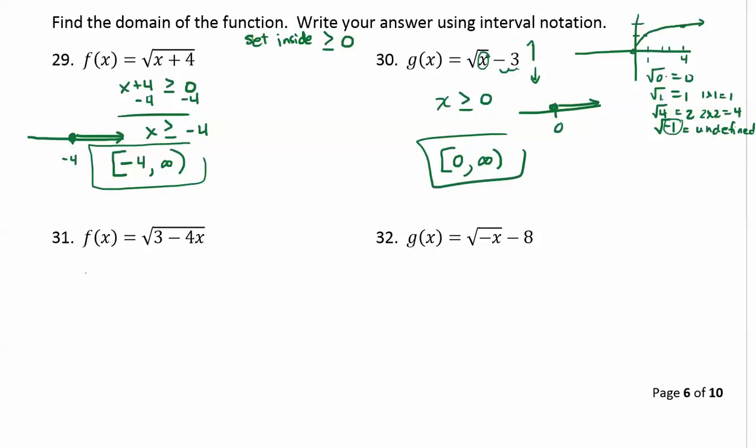Next we have f of x equals square root of 3 minus 4x. So 3 minus 4x must be greater than or equal to 0. If I subtract 3, I get negative 4x is greater than or equal to negative 3. Then I would divide both sides by negative 4.